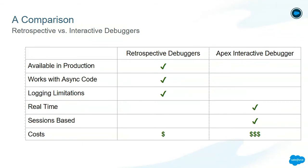Let's do a comparison of the two. Now that we know a bit about the different debuggers, we'll look at how retrospective and interactive debuggers differ. There are two main IDEs that provide retrospective debuggers: the Welkin Suite and Illuminated Cloud. One key feature of the retrospective debuggers is that they're able to debug code in production environments as well as sandboxes. They also work with any asynchronous code — batchable classes, schedulables, futures.